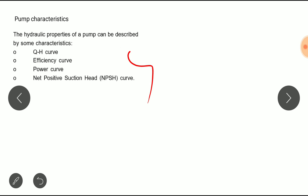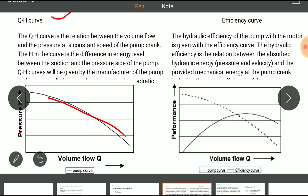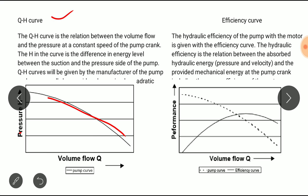Let's understand one by one: Q-H curve, efficiency curve, NPSH curve, and Net Positive Suction Head curve. This is the Q-H curve. The Q-H curve is the relation between the volume flow rate and the pressure at a constant speed of the pump crank. The H in the curve is the difference in energy level between the suction and the pressure side of the pump. Q-H curves will be given by the manufacturer of the pump.